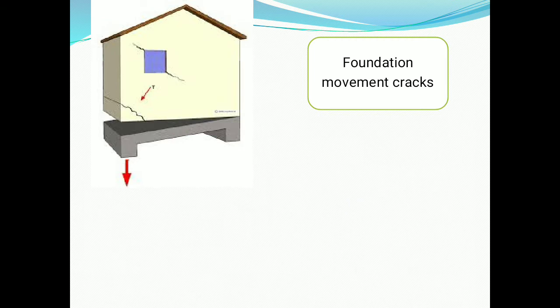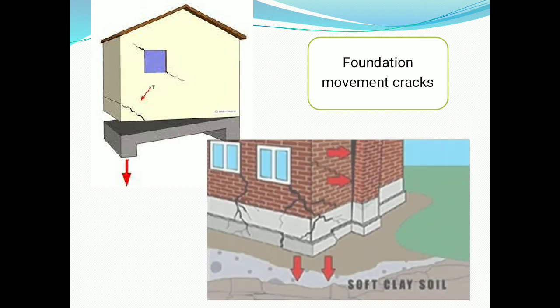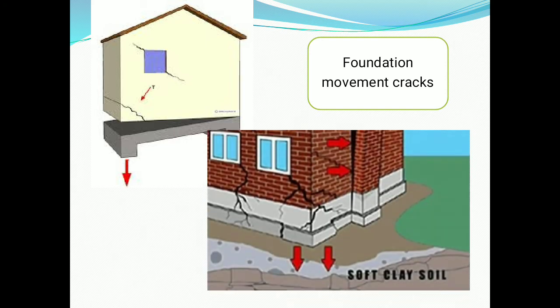These are some examples of foundation movement cracks. In the figure, the foundation is moved out from the base, therefore diagonal cracks are developed at the foundation. In the second example, if soft clay soil is available near the site, the foundation will move, which is shown at the base of the structure.